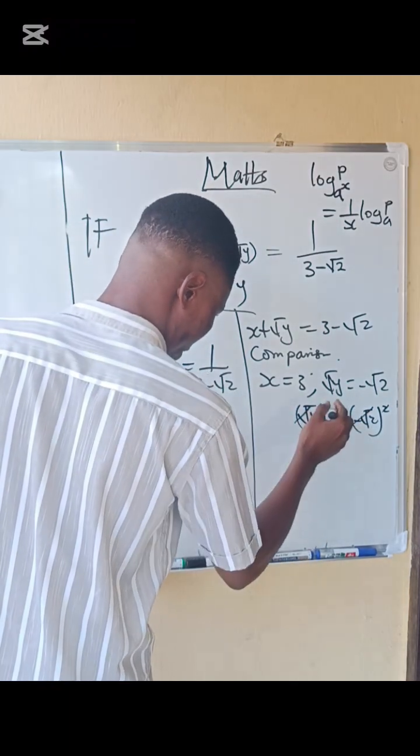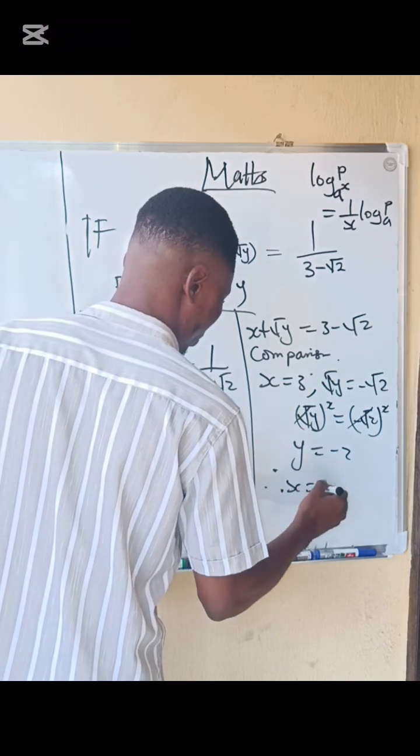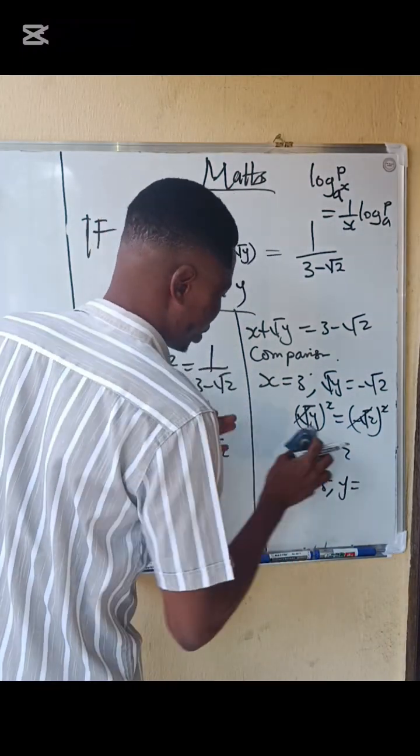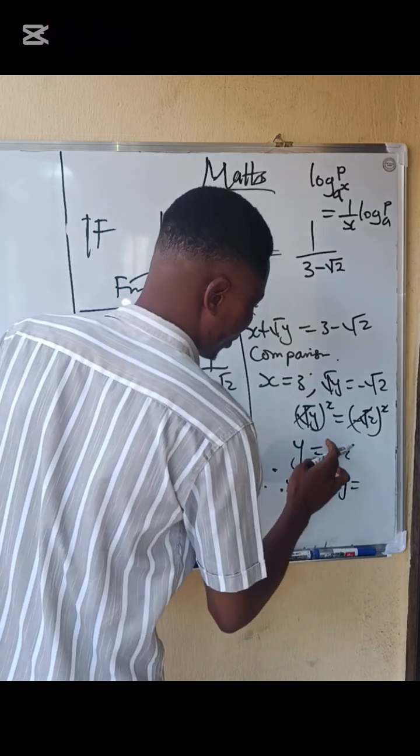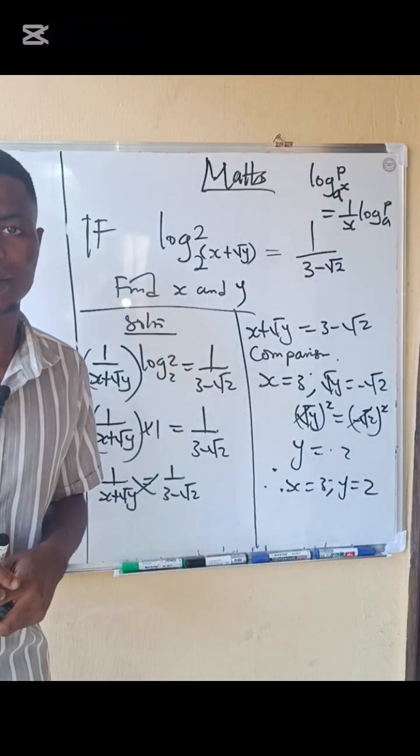Squaring minus root 2 gives us the answer. Therefore x equals 3 and y equals 2. That is the answer.